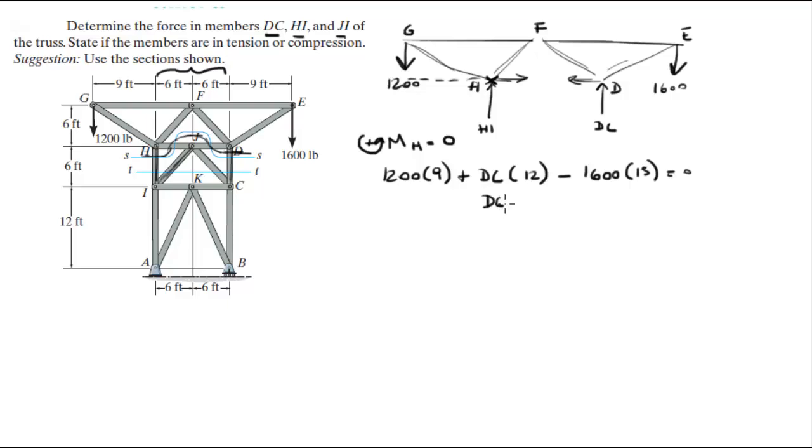So when you solve for DC, this is 1100 pounds, and it's positive so it was going up indeed. And if DC was going up right here, means that it's going down right here, and it means that it is in compression.